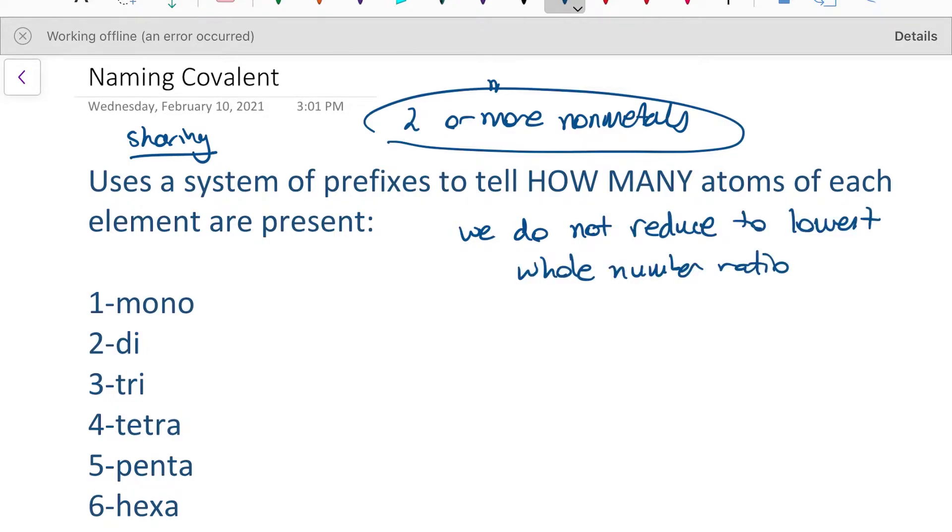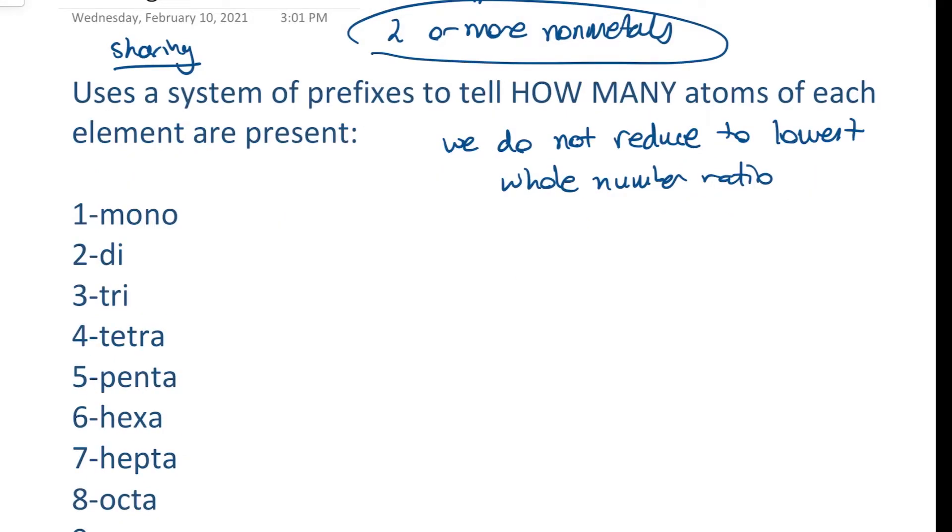Now naming covalent compounds is very easy compared to some of the other lessons we've had. However, the hard part is when you throw it all together, not jumbling them all. So let's learn the easy part, let's learn how to name the covalent compounds, then we'll mix them in with ionic compounds and learn how to name them all together.